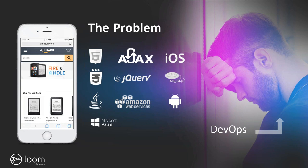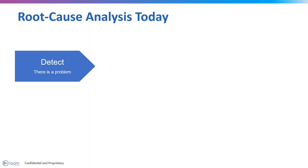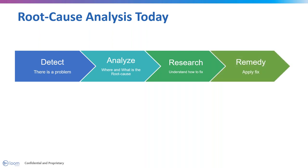In the last two years at Loom, we've been observing dozens of DevOps engineers, SREs, and production engineers to learn how they perform root cause analysis. We found there are actually patterns and conventions in the way they work. The process can be described as: A — detecting there's a problem; B — analyzing where and what is the root cause; C — researching and understanding how to fix it; and D — applying the relevant fix. It may sound simple, but let's drill down into each of these phases.